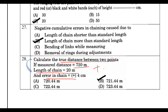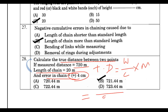To measure true distance, the formula uses wrong length divided by correct length multiplied by measured distance. If the error is positive at 4 cm, the actual chain length is 20.04 m. With a measured distance of 720 m, the true distance calculates to 721.44 meters.